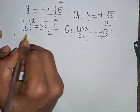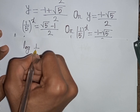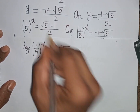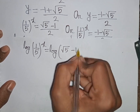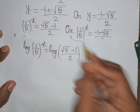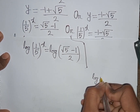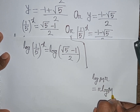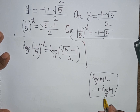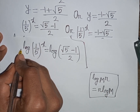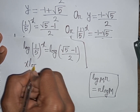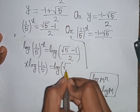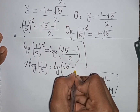From the valid equation, we take log on both sides: log of (1/5)^x equals log of (square root of 5 minus 1) / 2. Applying the rule log(m^r) = r·log(m), the power x moves to the front: x·log(1/5) equals log of (square root of 5 minus 1) / 2.